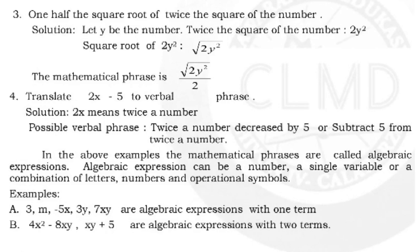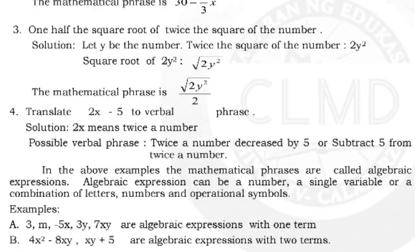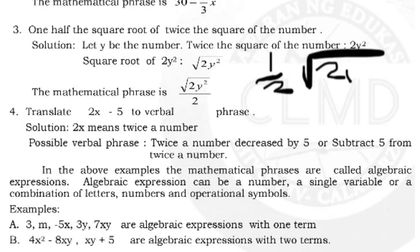Number 3: one half the square root of twice the square of the number. Let y be the number. Twice the square of the number is 2y². The square root of that is √(2y²). One half of that gives us √(2y²)/2, which can also be written as (1/2)√(2y²). Both forms mean the same thing.